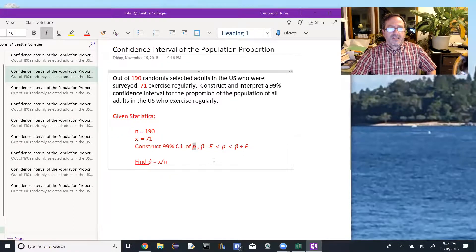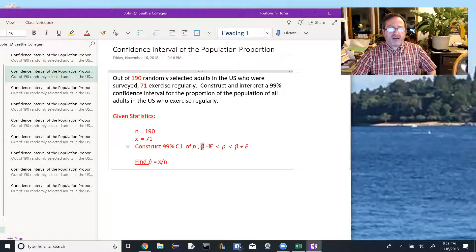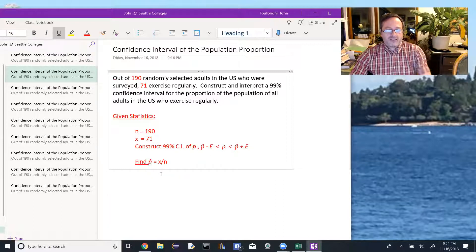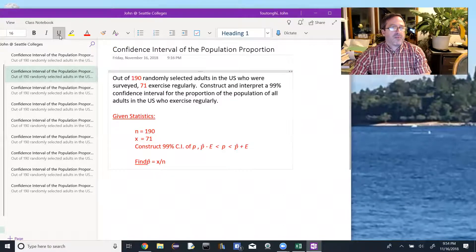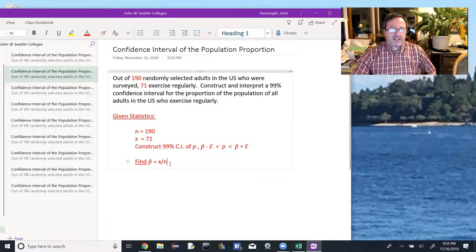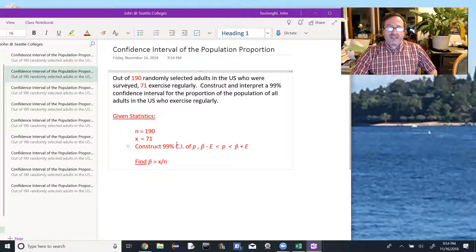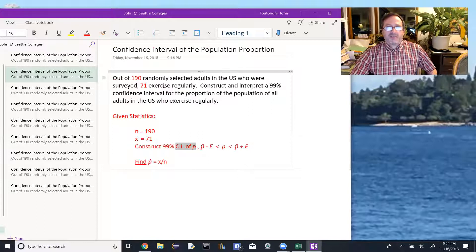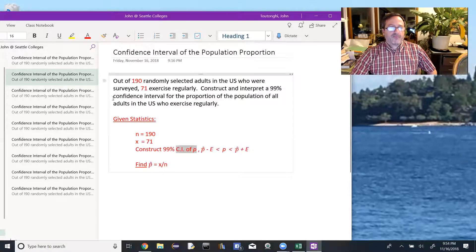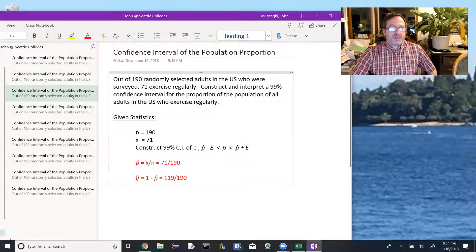That interval looks like p-hat minus the error is less than p, which is less than p-hat plus the error, where p-hat is our sample proportion, and that's the value found by taking x divided by n. What's important here is to recognize what type of confidence interval we're taking, that we're taking a confidence interval of the proportion, as opposed to the previous stuff where we're taking confidence intervals of the mean.